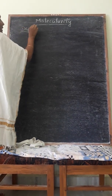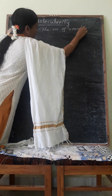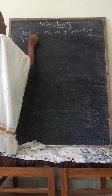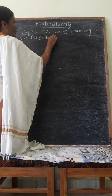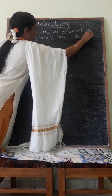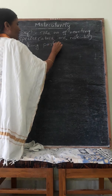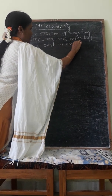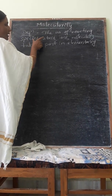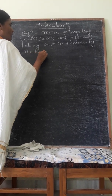The definition of molecularity is the number of reacting species. The term 'reacting species' indicates they may be atoms, ions, or molecules. These reacting species take part in an elementary reaction and undergo effective collision to form the product. This is called molecularity.